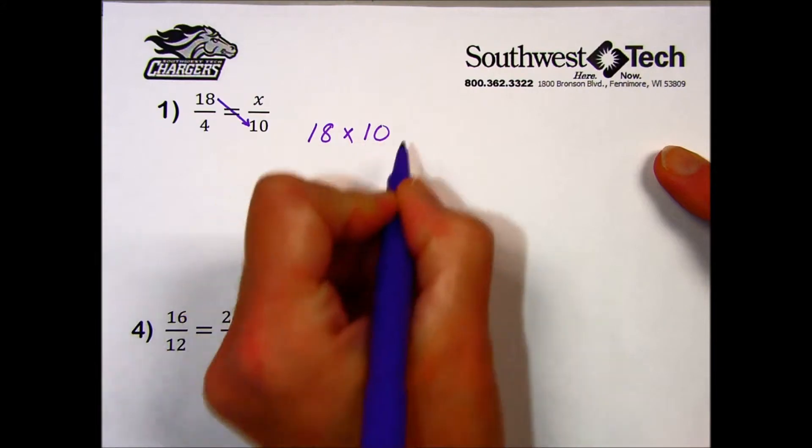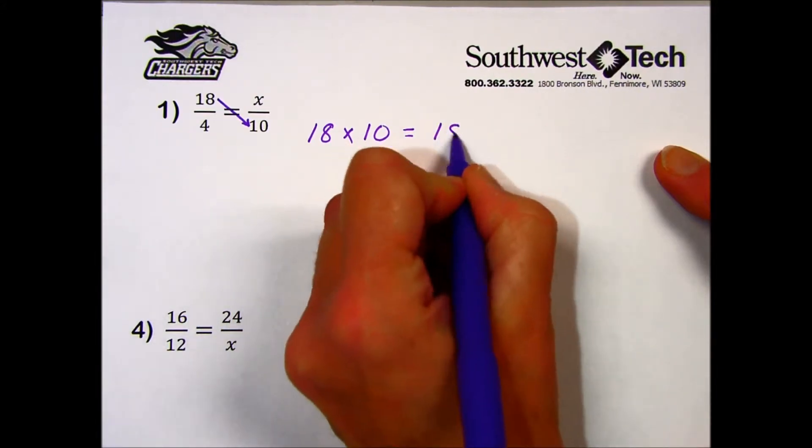For problem number one, we take 18 times 10, which is 180.